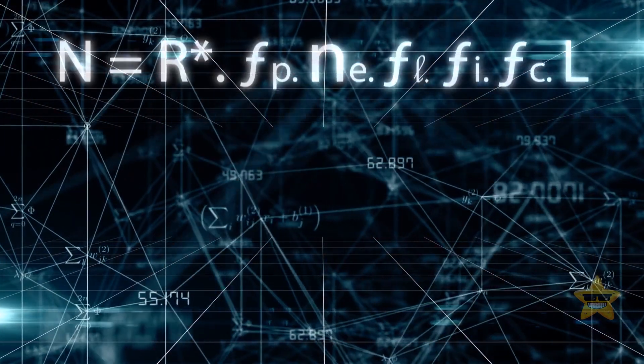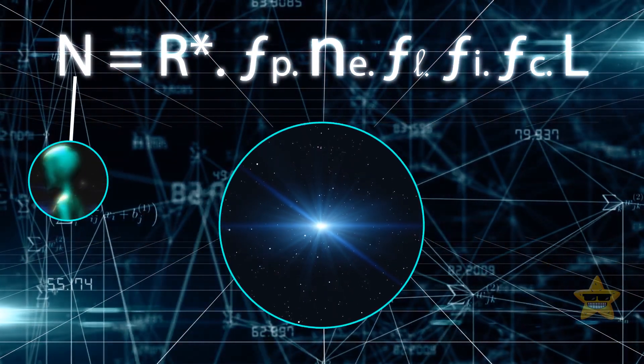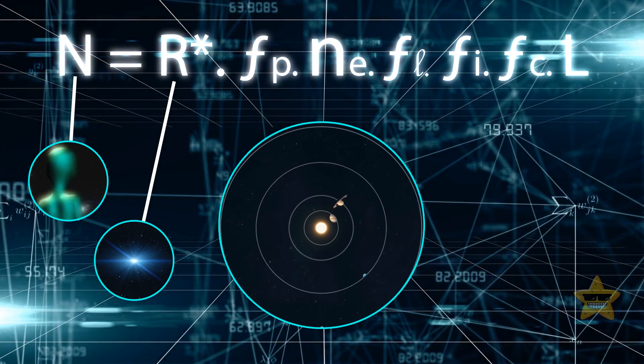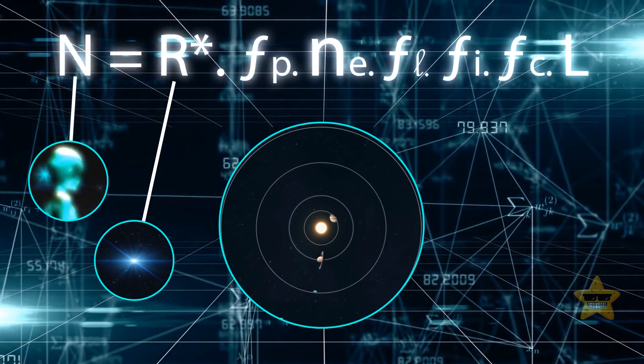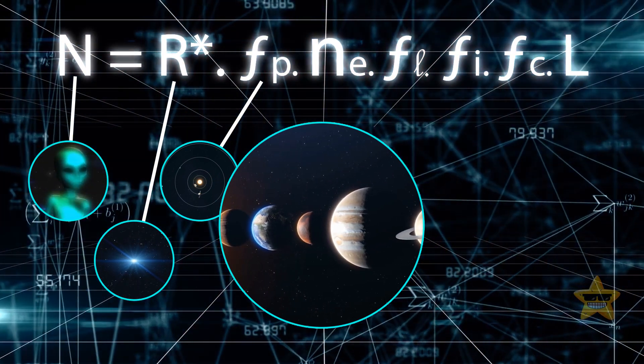Here are the variables in it. N is the number of civilizations we could potentially talk to in our galaxy. R star is how fast new stars are born in our galaxy. F sub p is the fraction of stars with planets around them. N sub e is the average number of planets around each star that could support life.